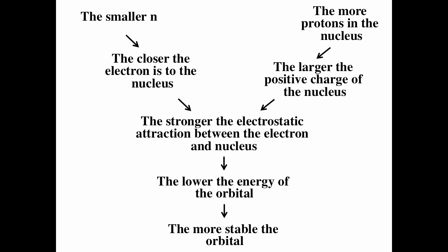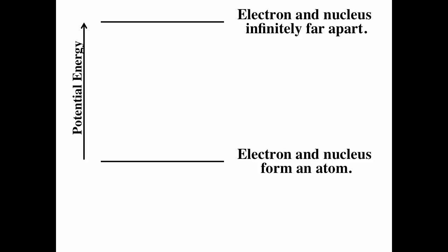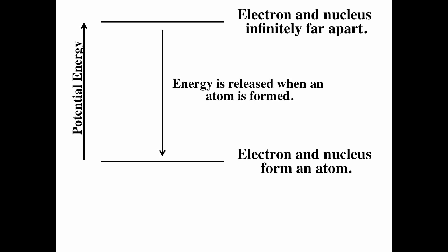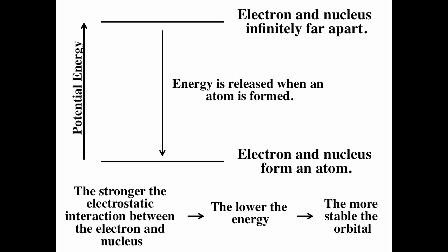The stronger the electrostatic attraction, the lower the energy of the orbital, the more stable. If we imagine an electron and nucleus infinitely far apart and not interacting, that energy would be zero. As the electron and nucleus come together to form an atom, we get a more stable configuration — energy is released. The stronger the attraction, the lower the energy, the more stable.